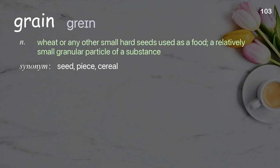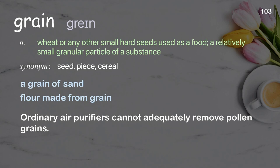Grain: Wheat or any other small hard seeds used as food; a relatively small granular particle of a substance. Examples: A grain of sand. Flour made from grain. Ordinary air purifiers cannot adequately remove pollen grains.